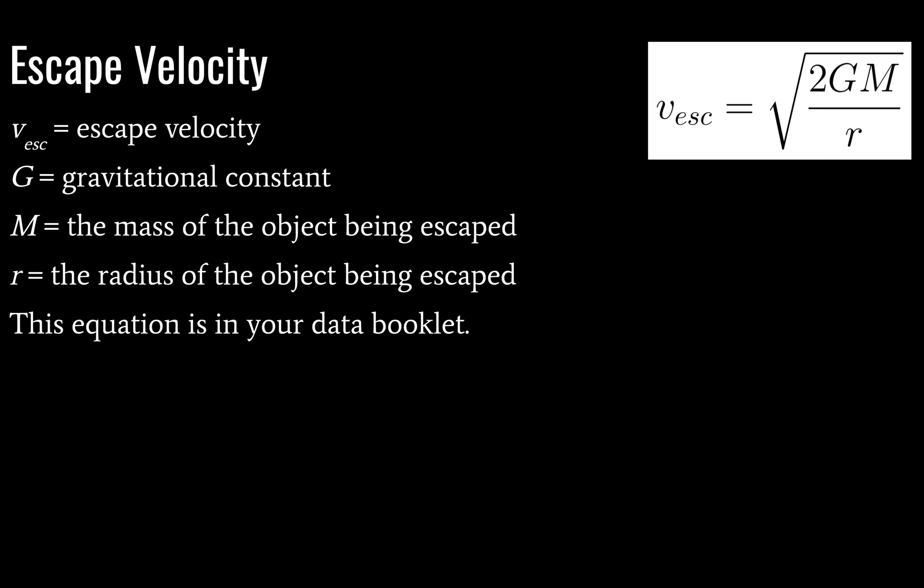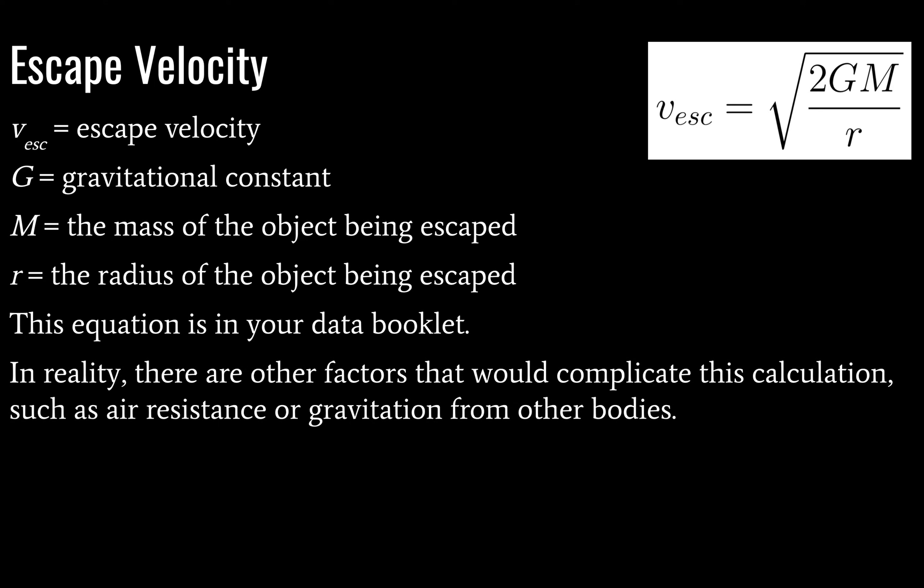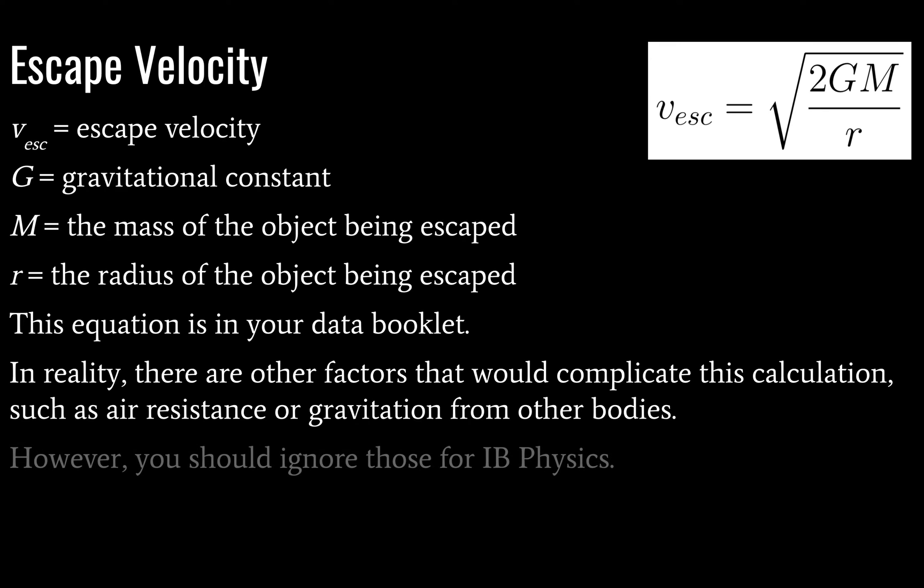This equation is in your data booklet, which is convenient. In reality, factors like air resistance and gravitation from other bodies would complicate the calculation, meaning the escape velocity you calculate will be slightly too small compared to the actual escape velocity. But for IB physics, we don't worry about those things — we are working with approximations.